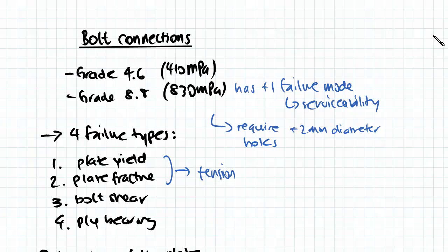Alright, so the first one we're going to look at is grade 4.6. It's a commercial bolt and it has a tensile strength of 410 megapascals. The second one is a grade 8.8 and it is a high strength bolt and it's more commonly used in our steel structures. And it has a tensile strength of 830 megapascals.